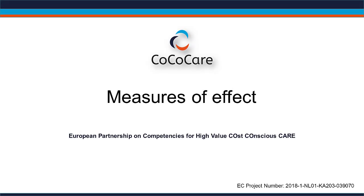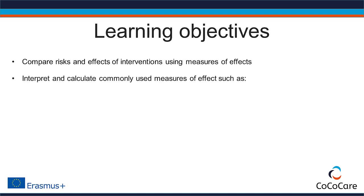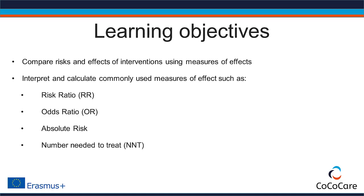This video introduces measures of effect that are commonly used in clinical and epidemiological studies. After watching, you will be able to compare risks and effects of interventions using measures of effects. You will know how to interpret and calculate commonly used measures of effect, such as risk ratio, absolute risk, odds ratio, and number needed to treat.